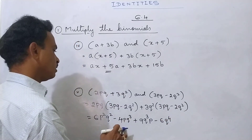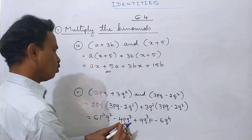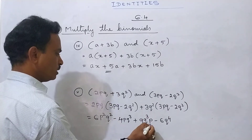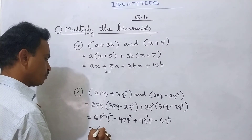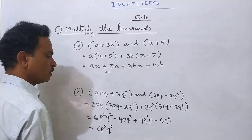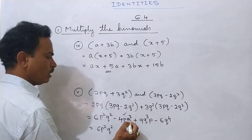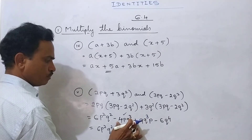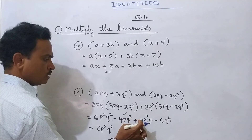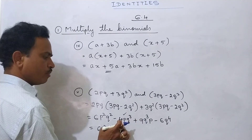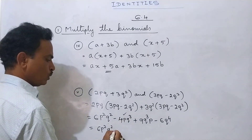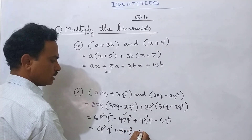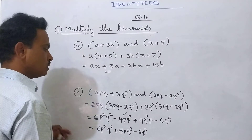Check for like terms: 6p²q² is the first term as it is. Now minus 4pq³ plus 9pq³ — opposite signs, so subtract: 9 minus 4 equals 5, biggest number sign is positive, so plus 5pq³. Then minus 6q⁴. So the solution is 6p²q² + 5pq³ - 6q⁴.